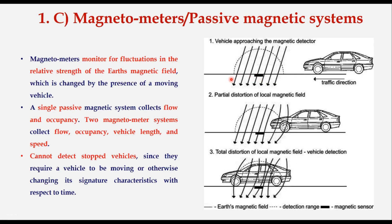Magnetometers are widely used for measuring the earth's magnetic field. A magnetic sensor is placed below the top surface of the road and it creates a magnetic field. When a vehicle passes through this magnetic field, it causes fluctuations, and this fluctuation is used to measure flow and occupancy. A single passive magnetic system can collect data on flow and occupancy, whereas a two-magnetometer system can collect data on flow, occupancy, vehicle length and speed. However, magnetometers cannot detect stopped vehicles since they require a vehicle to be moving to make a change in the magnetic field.